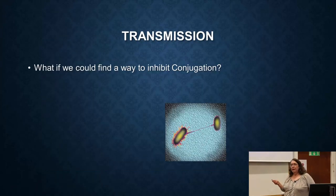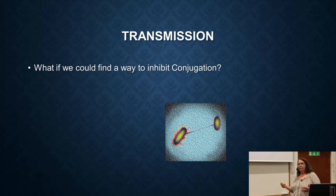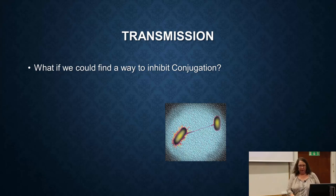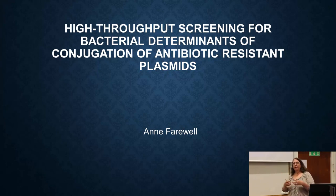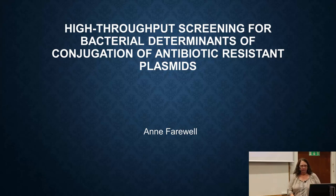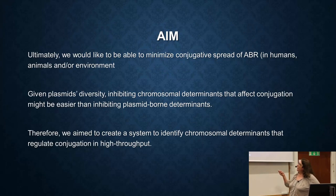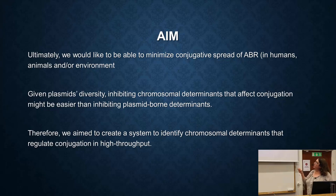The next theme is transmission, which in this sense refers to conjugation — how DNA can be transferred directly to other bacteria. This is my personal project, along with Martin's. We have a project looking for inhibitors of conjugation, so we want to develop a drug that will stop conjugation. That could slow down the spread of resistance — it's not going to solve it, but it will slow it down.